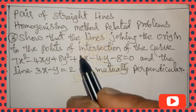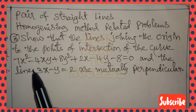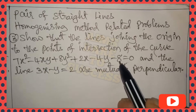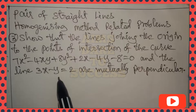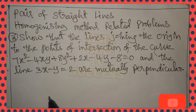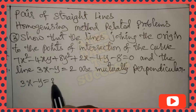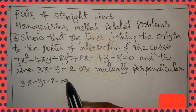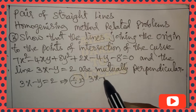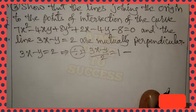Hi, hello, namaste. Welcome to AIM's Dare to Success YouTube channel. Today we are discussing pair of straight lines, homogenizing method related problems, number three. Show that the lines joining the origin to the points of intersection of the curve 7x²-4xy+8y²+2x-4y-8=0 and the line 3x-y=2 are mutually perpendicular.